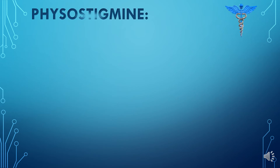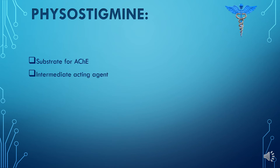Next, we have the reversible anticholinesterase agent physostigmine. It will temporarily bind to the acetylcholinesterase enzyme and temporarily inhibit that enzyme. Physostigmine can also be broken down by the acetylcholinesterase enzyme, as it is a substrate for that enzyme. It is an intermediate-acting agent with both muscarinic and nicotinic effects.